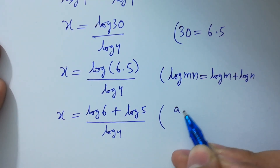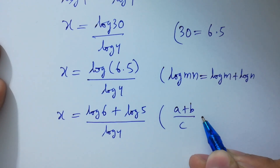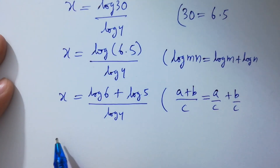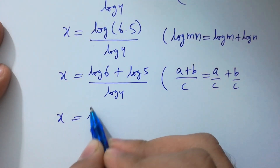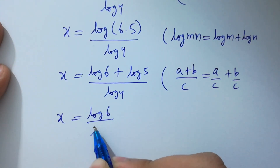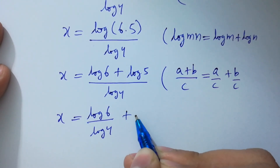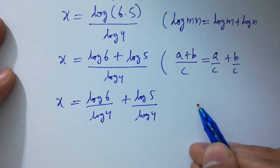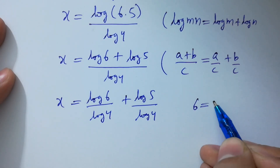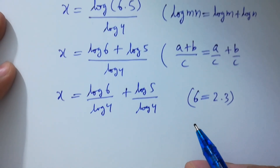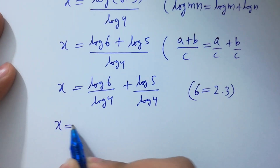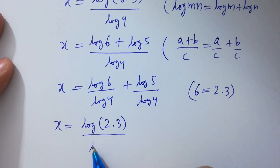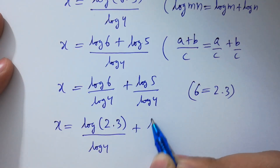Since (a + b) over c equals a over c plus b over c, so x equals log 6 over log 4 plus log 5 over log 4. Since 6 equals 2 times 3, so x equals log(2 times 3) over log 4 plus log 5 over log 4.